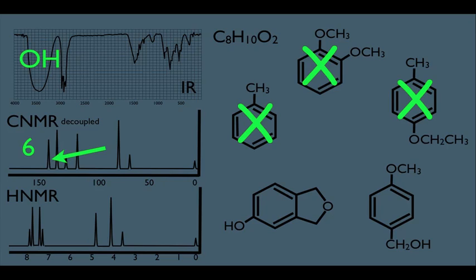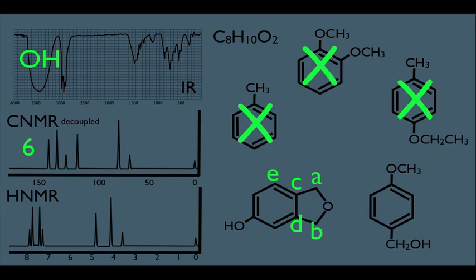Let's see if we can rule out an answer. Let's go to this molecule right here and see how many carbons it should have in the CNMR. We'll start here and call these the A-type carbons, this a B-type carbon. Notice there's no symmetry here because of that OH in the lower left, which means this is the C-type carbon, this would be D-type, E, F, G, H. Notice that's a total of eight carbons — so this could not be our molecule, and we can rule it out.